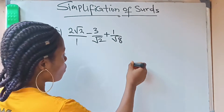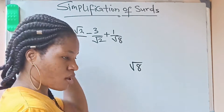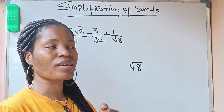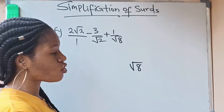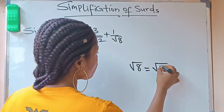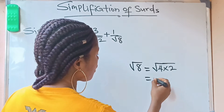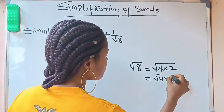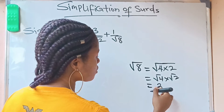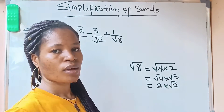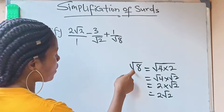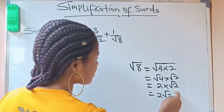To simplify root 8, you look for two numbers that multiply to give 8, where one is a perfect square and the other is an ordinary number. Root 8 can be expressed as root 4 times root 2. Now root 4 is 2, so this is 2 times root 2, which equals 2 root 2. So root 8 can be replaced with 2 root 2 — that is its simplest form.